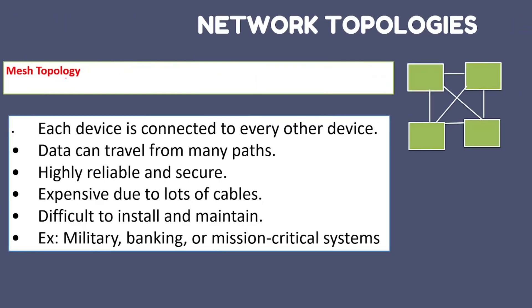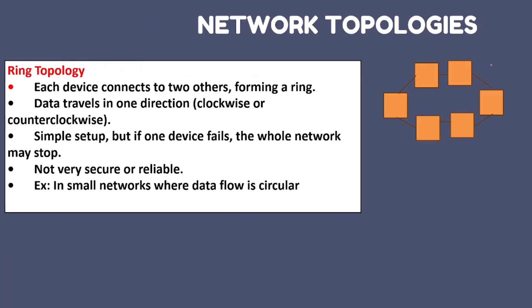The first topology is mesh topology. Draw four computers labeled N1, N2, N3, N4. In mesh topology, each computer is connected to every other computer. The first point to mention is: every device is connected to every other device. Data can travel through many paths, making it highly reliable and secure. It is expensive due to a lot of cables and is difficult to install and maintain. An example is military or banking.